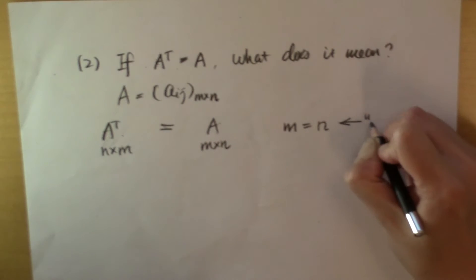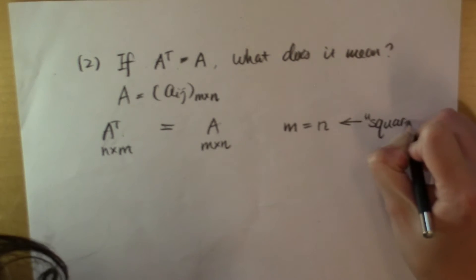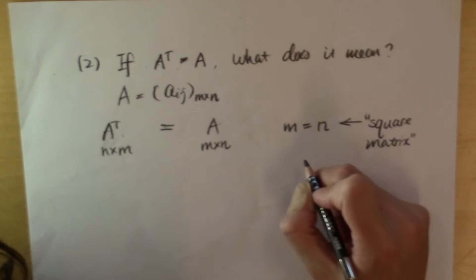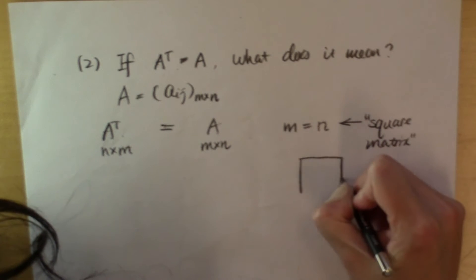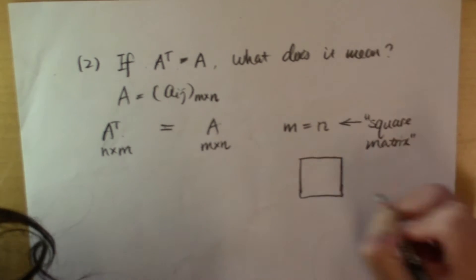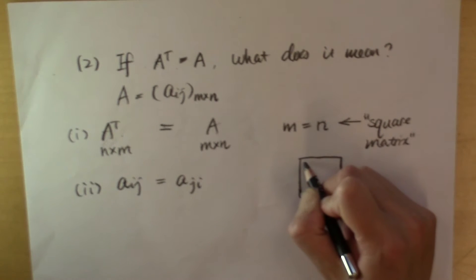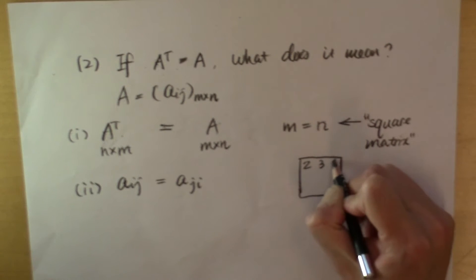Whenever this happens, the matrix is called a square matrix. The name is intuitive because the shape of the matrix is going to be a square instead of a rectangle. For example, this is a square matrix: 2, 3, 4, 1, 2, 1, 0, 1, 1.